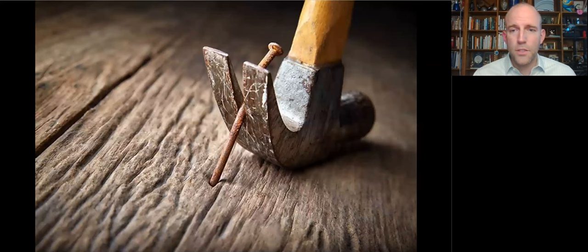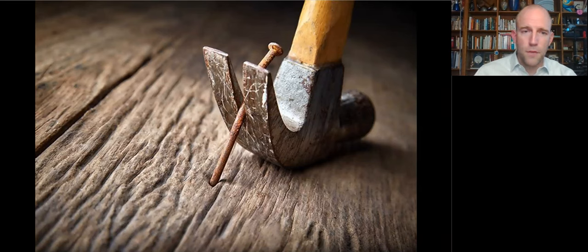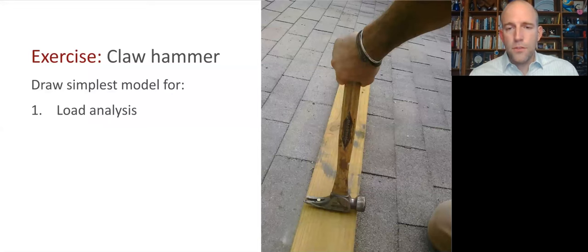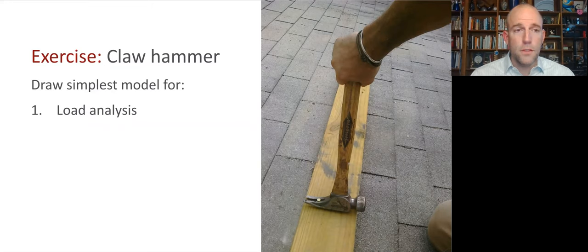So in this exercise, we're going to develop simple models of a claw hammer. And a claw hammer is a tool that's used both to hammer nails into material, and to pull them out by wedging them into this tapered slot, and then levering against the board so that the hammer is kind of pushing there.